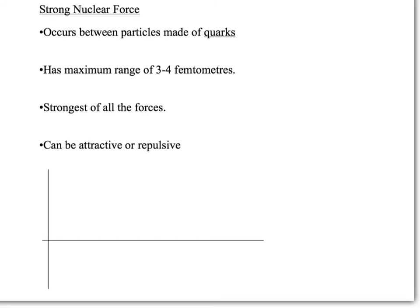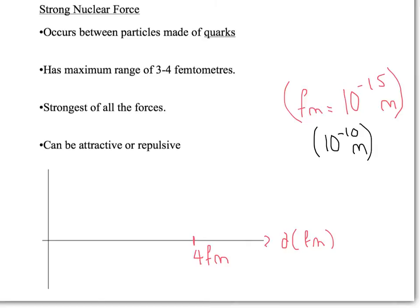The strong nuclear force is something you may well not have heard of. This occurs between particles made of quarks - things like protons, neutrons, mesons. Anything made of quarks can interact through the strong nuclear force with another object that is also made of quarks. Key thing: this is not an infinite range force. It has a maximum of about 4 femtometers. An fm is 10 to the minus 15 meters, so we're talking tiny, tiny scales. The size of an atom is about 10 to the minus 10, so we're talking about tiny, tiny distances here.